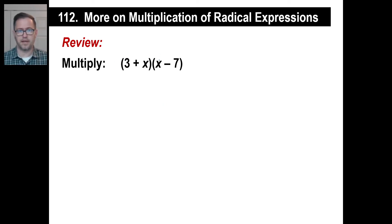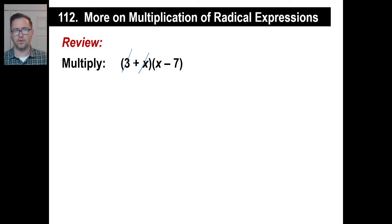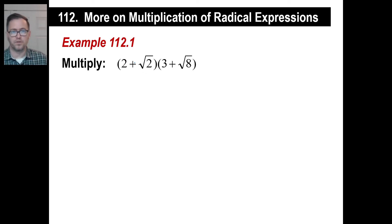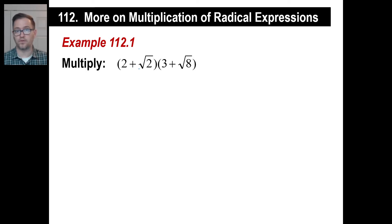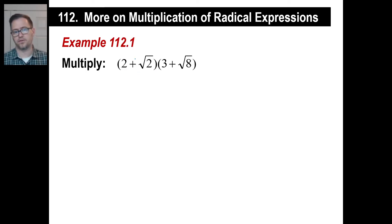Now for a polynomial example — the method is the same. We take 3 times x, then 3 times negative 7, and we're done with 3. Then x times x, and then x times negative 7, and we're done. We add like terms and that's it. We're going to take the exact same approach doing this with square roots. The method stays the same — it doesn't matter if there are square roots or just x's and constants.